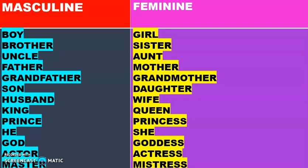Here is a table which shows the masculine as well as the feminine gender of nouns: boy/girl, brother/sister, uncle/aunt, father/mother, grandfather/grandmother, son/daughter, husband/wife, king/queen, prince/princess, he/she.